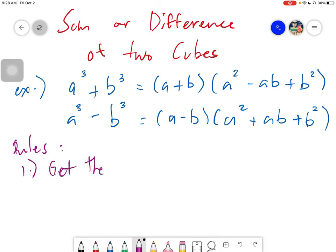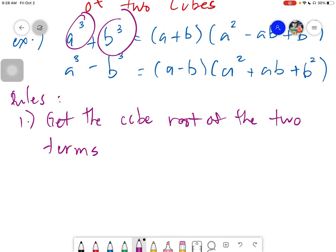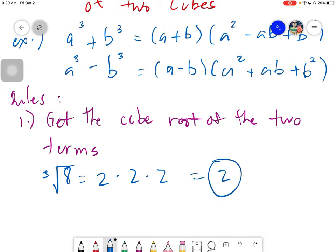Number one, you have to get the cube root of the two terms. For example, you have this a cubed and b cubed, so you get the cube root of both. When we're talking about cube root, you will look for three numbers, a number multiplied thrice to itself. For example, if you get the cube root of eight, the answer is two times two times two. Therefore, the cube root of eight is simply two.